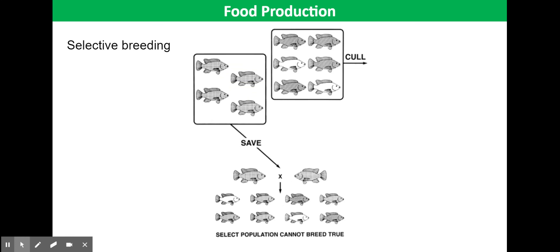A final key advantage of fish farms is selective breeding. Farmers may use selective breeding to only allow the fast-growing fish to reproduce, resulting in a large population of fish.